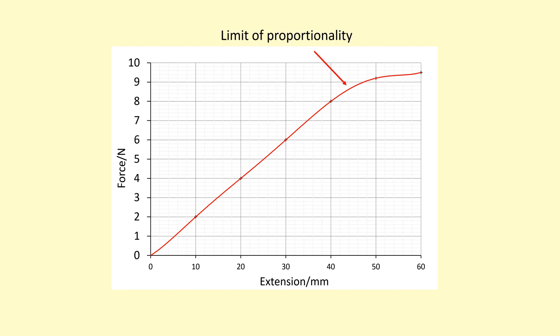However, this is only true up to the limit of proportionality. So this is the point on the line where it starts to curve. And beyond this point, we can no longer use Hooke's law. You can't use F equals K delta L.